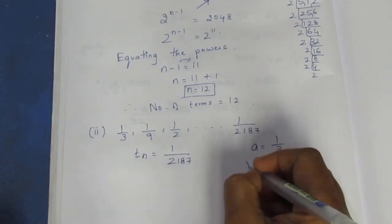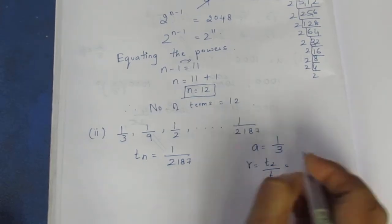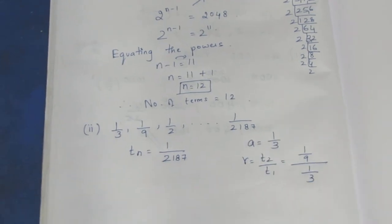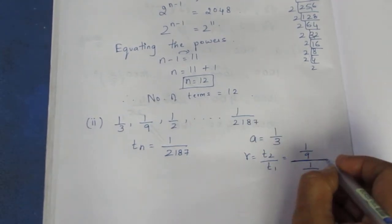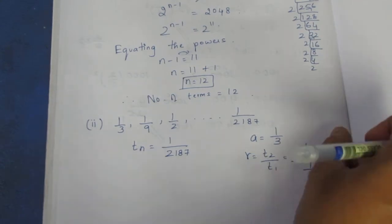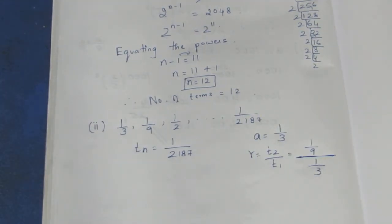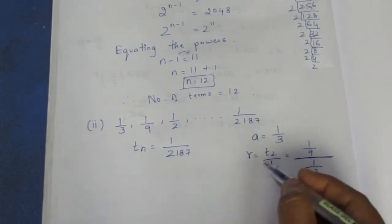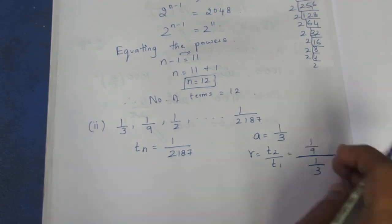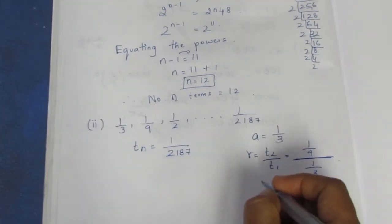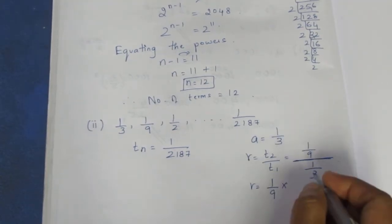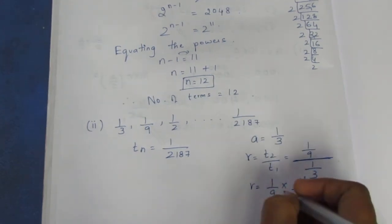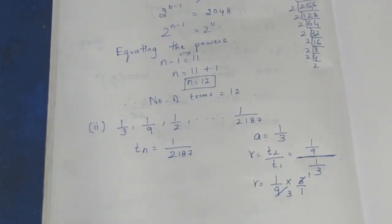R is the common ratio, T2 by T1. T2 is 1/9, so 1/9 divided by 1/3. The denominator's reciprocal: 1/9 multiplied by 3/1. Cancelling, 3 over 9 simplifies — so R equals 1/3.